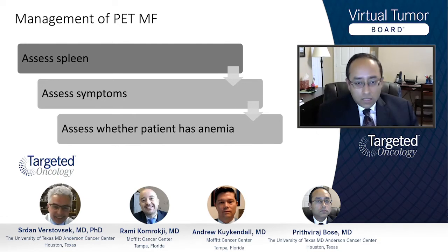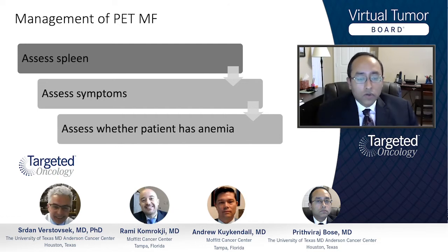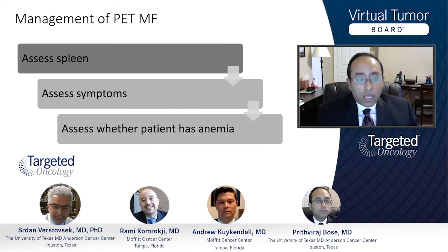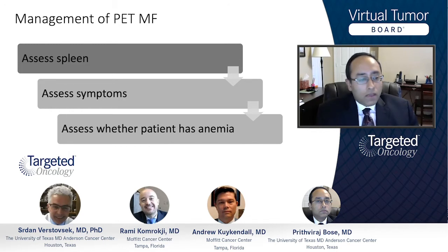It's either anemia-directed therapy or spleen and symptoms-directed therapy, which, of course, tends to be ruxolitinib. The prognosis changes in a significant way, and I usually have that discussion with the patient when it is post-ET MF.